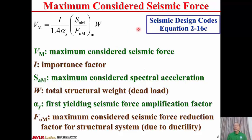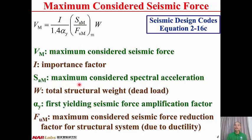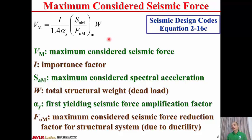From Seismic Design Code equation 2-2-16C, Maximum Considered Seismic Force is determined by: Vm equals I divided by 1.4 times alpha_y, times SAM divided by FuM, times W. Here, I is the importance factor, alpha_y is the first yielding seismic force amplification factor, SAM is the maximum considered spectral acceleration, FuM is the maximum considered seismic force reduction factor for structural system due to ductility, and W is the total weight of the structure.